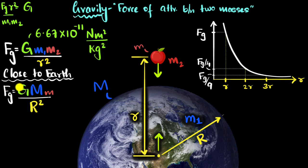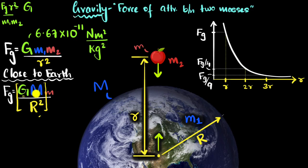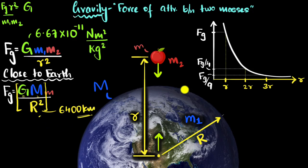Now since we're calculating this for the Earth, these numbers are fixed. G is a universal constant, which we already know. M is the mass of the Earth — we know it, and we'll see how we calculate it in a moment. And R is the radius of the Earth — we also know that value, it's approximately 6,400 kilometers. So since these values are fixed for Earth when we are close to it, instead of substituting every single time, we can just bunch it all together and substitute once.